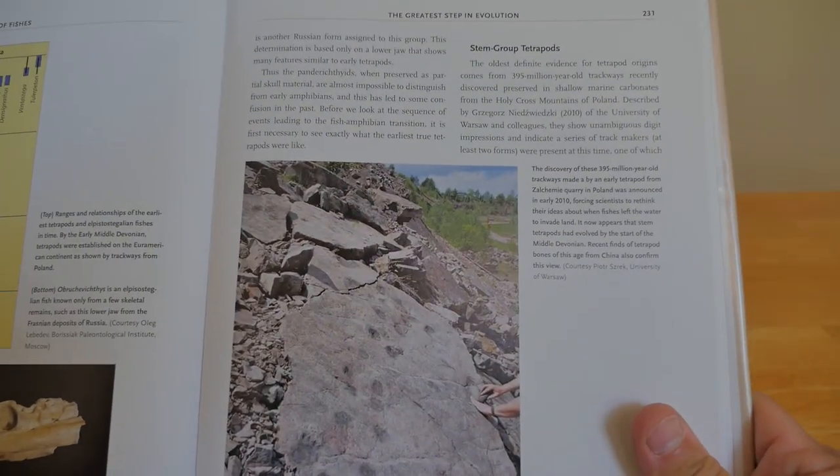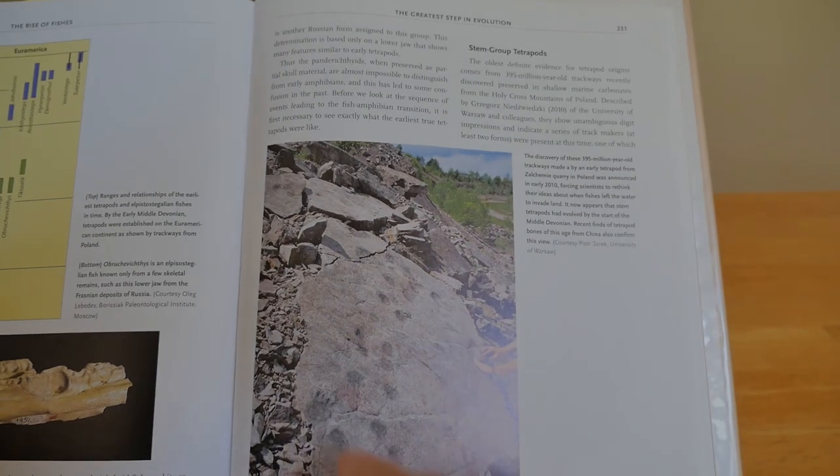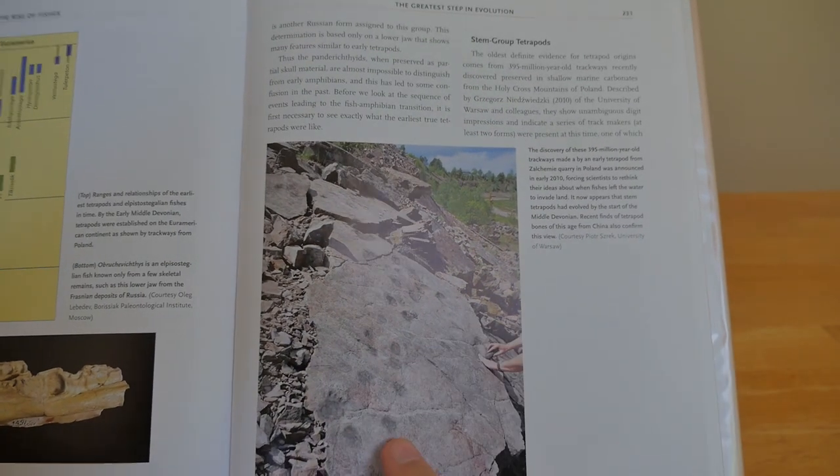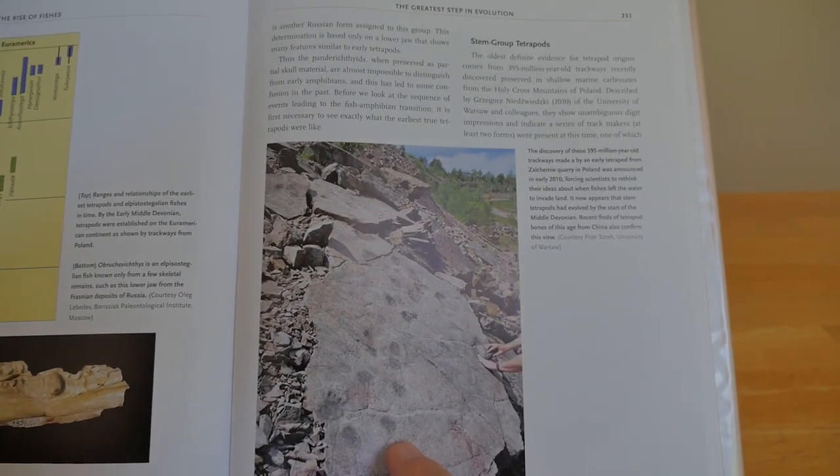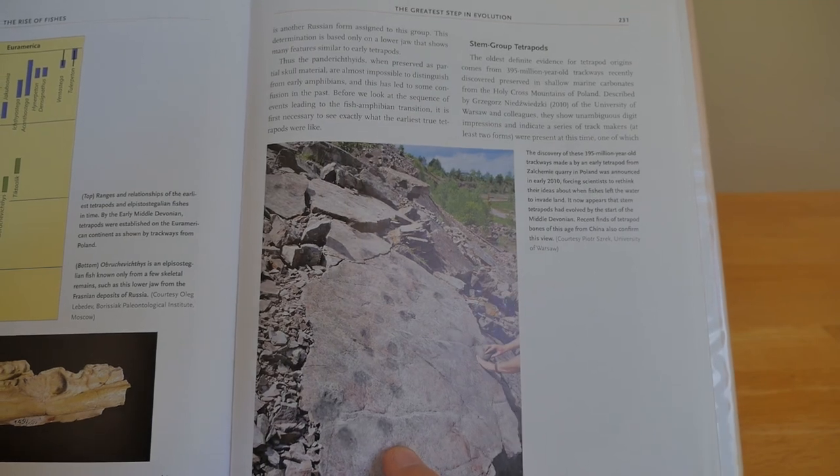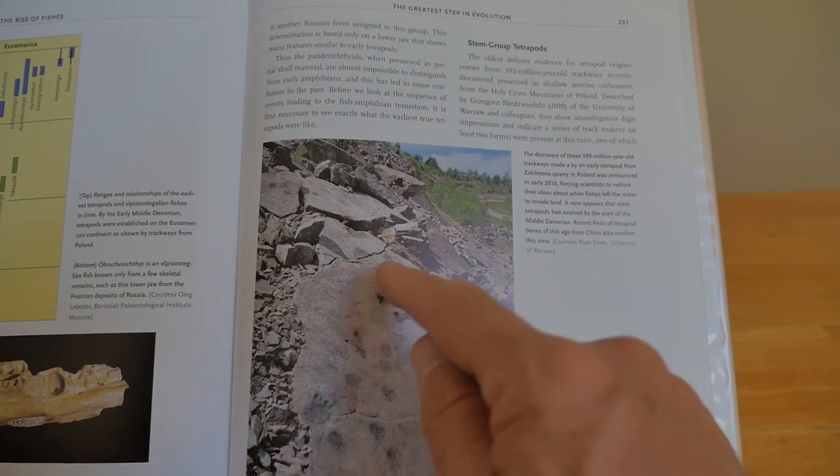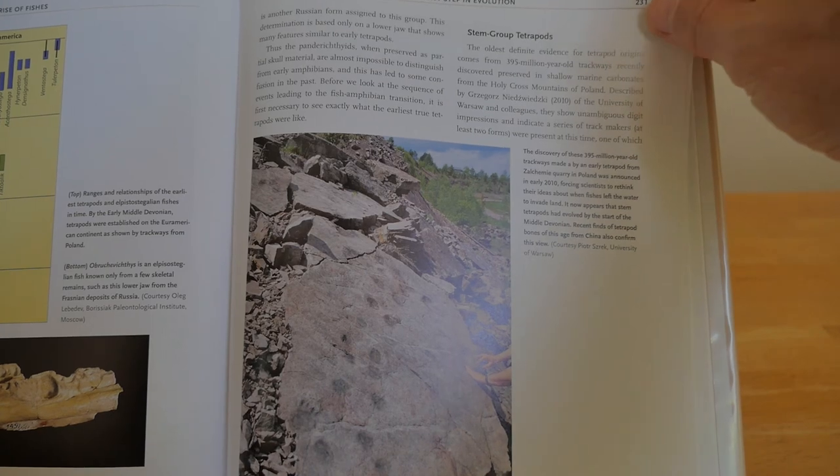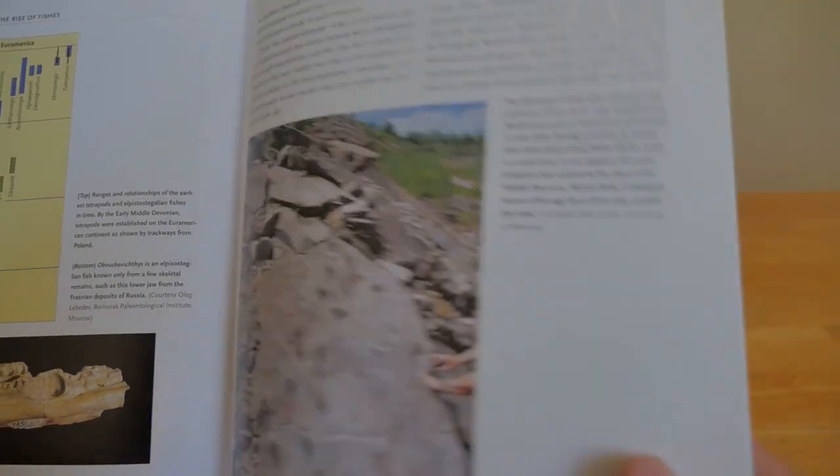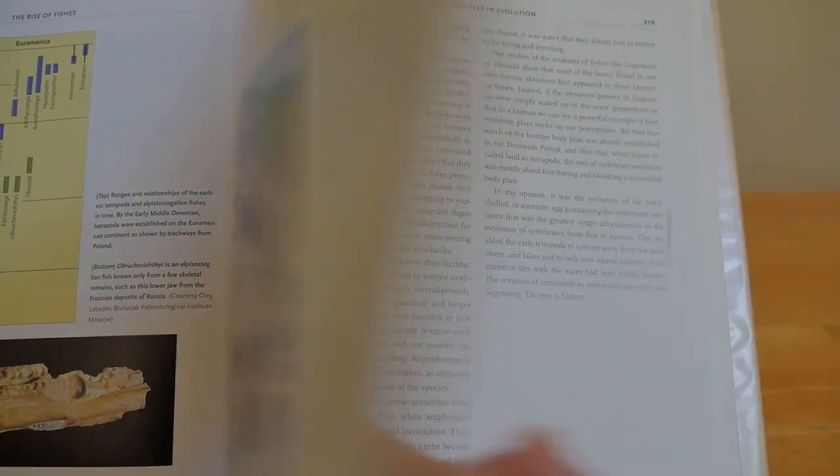Okay. Oh, here's something interesting. Look at these. These are 395 million year trackways. So just, what, five million years after 400 million years ago. And we have tetrapods. Maybe these are the earliest tetrapod trackways. Woo. 395 million years ago from Poland.